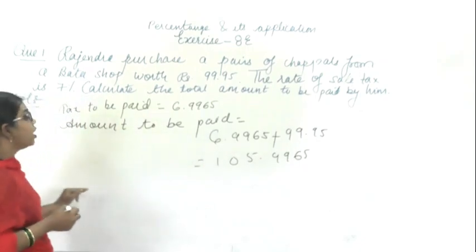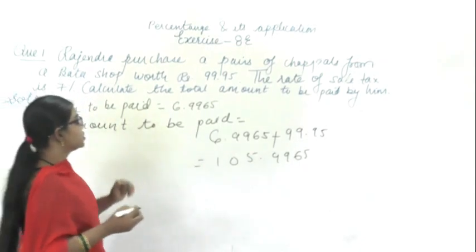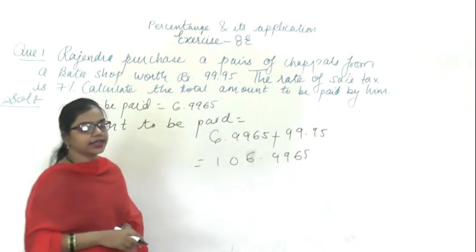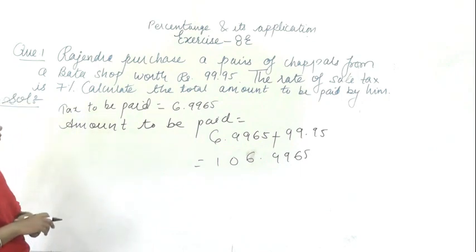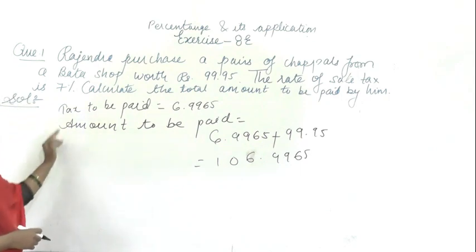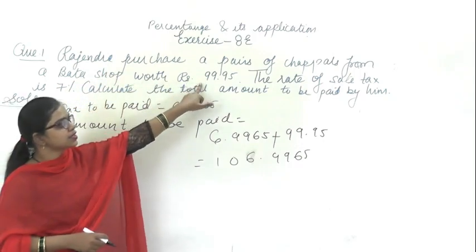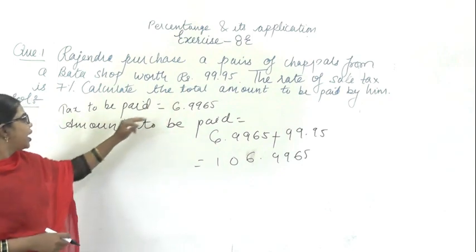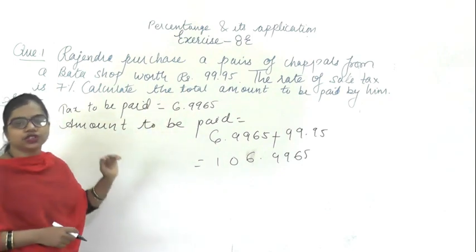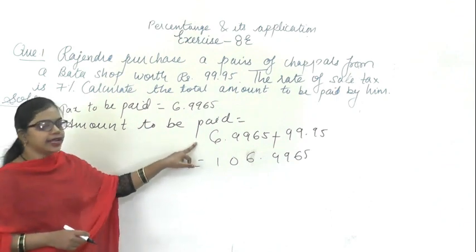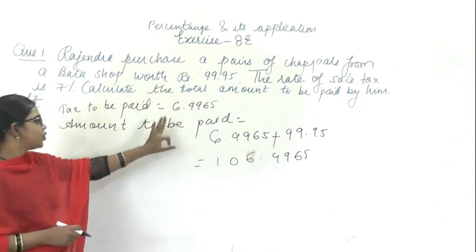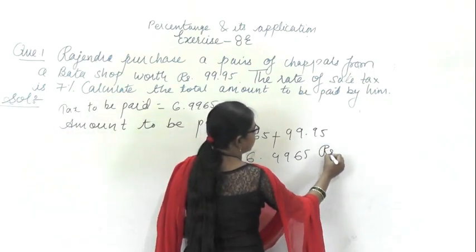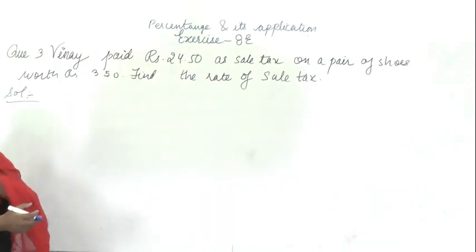On solving this you get 106.9965. So in this question, first what is given: the cost price of the shoes is 99.95, sale tax is 7%. You find out the tax to be paid, then add it to the cost price to get the total amount to be paid, that is 106.9965 rupees.